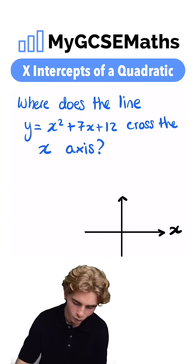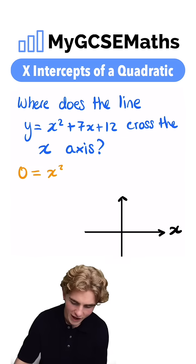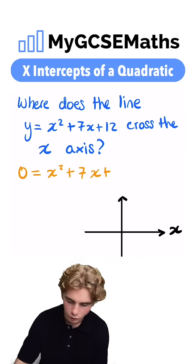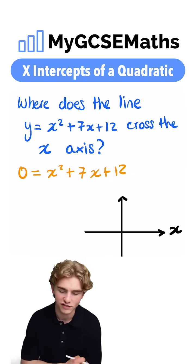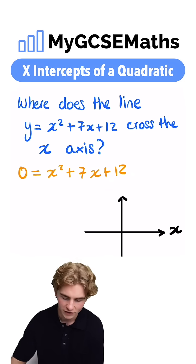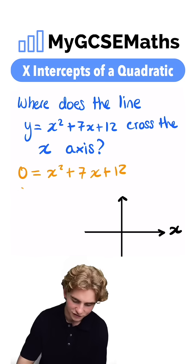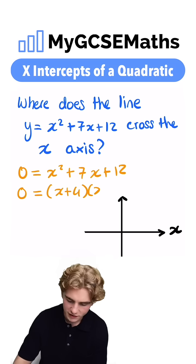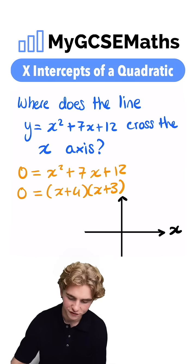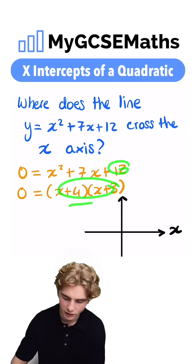So we're going to substitute in y equals 0. We get 0 equals x squared plus 7x plus 12. And now we have a quadratic equation equal to 0, which we can solve. We can use the formula or factorize or use whatever method we want. Let's factorize this. We have 0 equals x plus 4 times by x plus 3. That's because 4 times 3 is 12 and 4 plus 3 is 7.